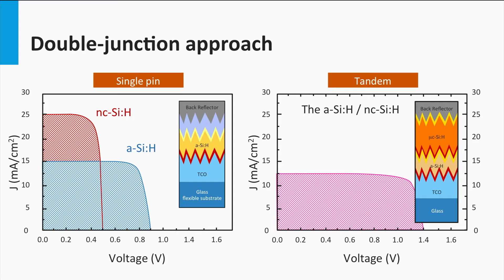Given the examples of the single junction here, the best current matching of both cells would deliver 12.5 mA per square centimeter.